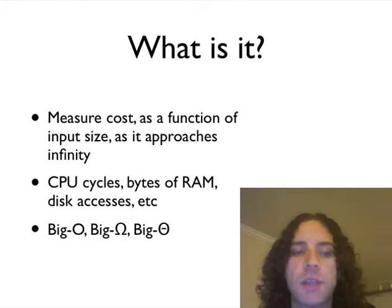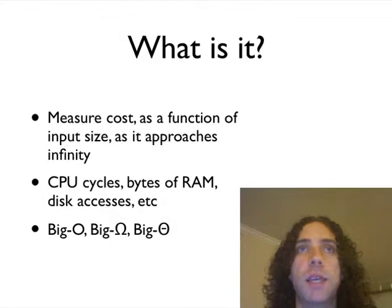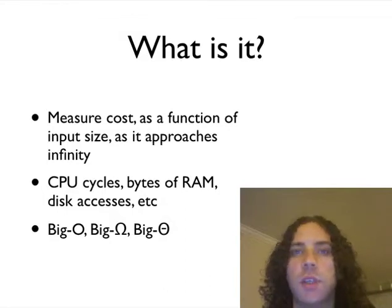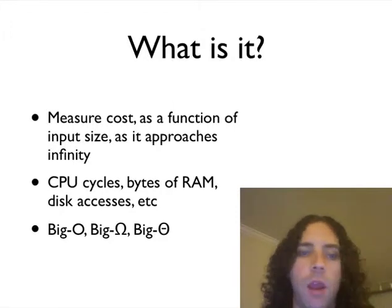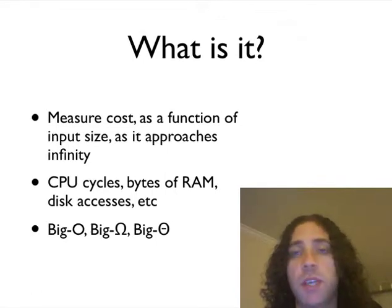Now the way we describe this is we have big O, which is the common one that we all use. It means that there's some function such that my algorithm's complexity is always bounded above by that function times some constant number. So this is usually the one we use, because that's kind of the answer to the question you wanted.